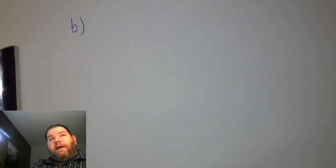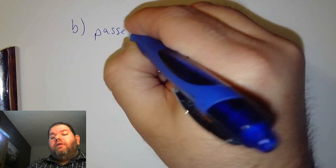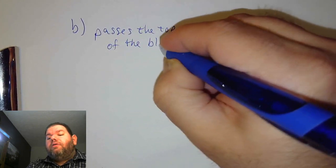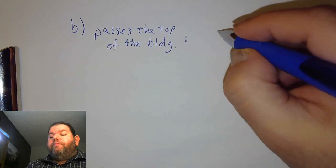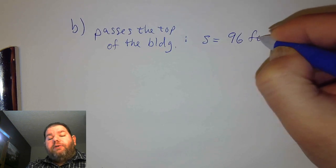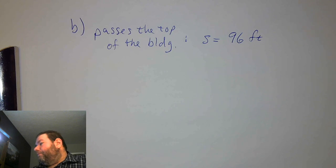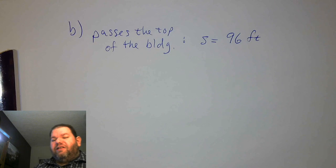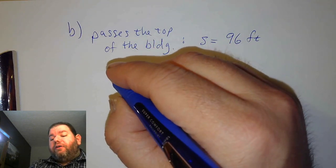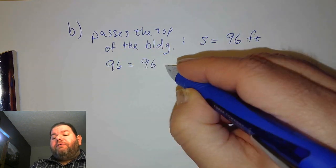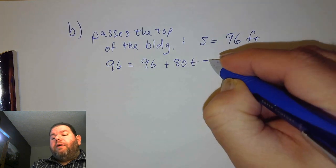Part B asks: how long does it take for the ball to pass the top of the building on its way back down? If it passes the top of the building, it must be at the same height as the building — 96 feet. So instead of plugging in s equals 0 like before, we'll plug in 96. So 96 equals 96 plus 80t minus 16t squared.